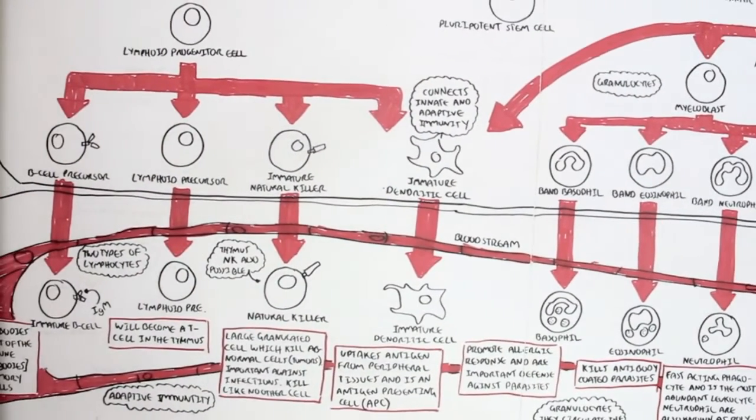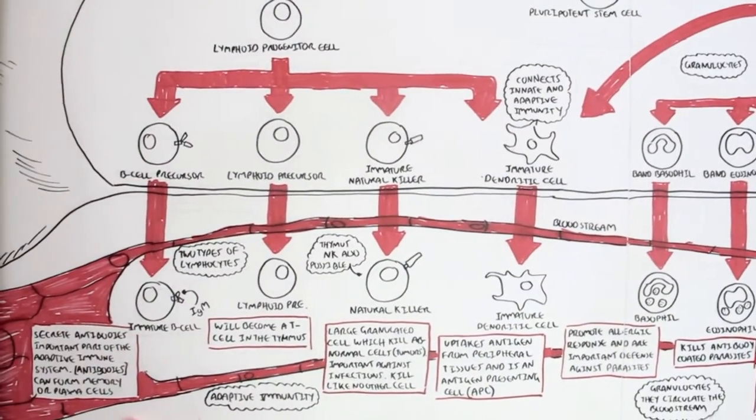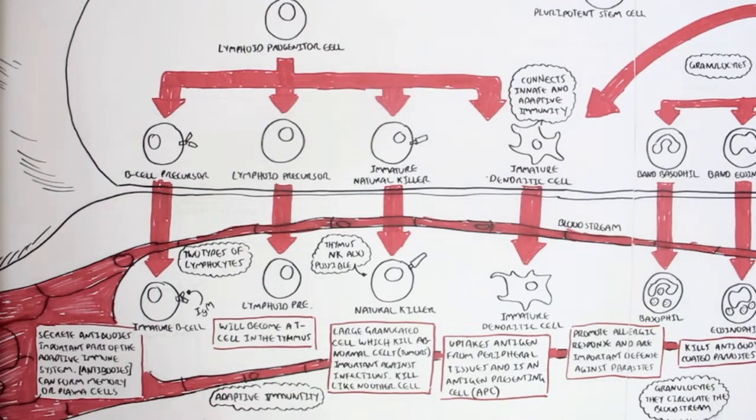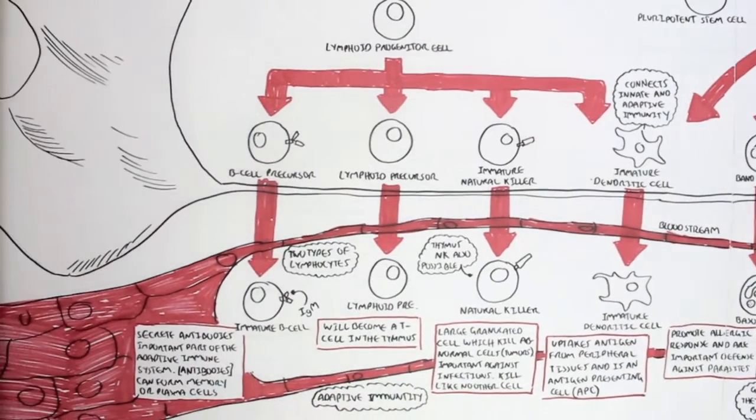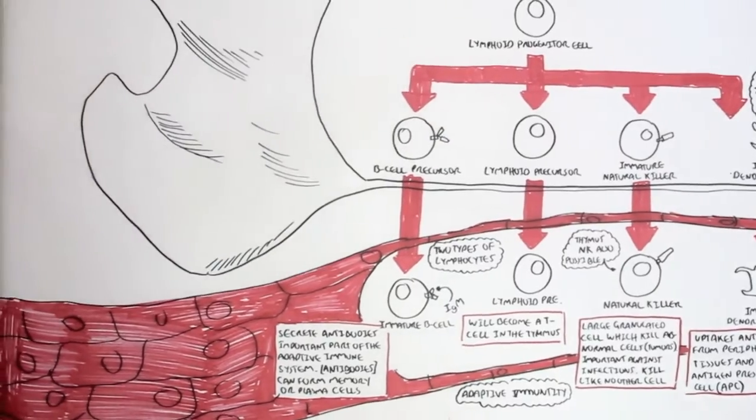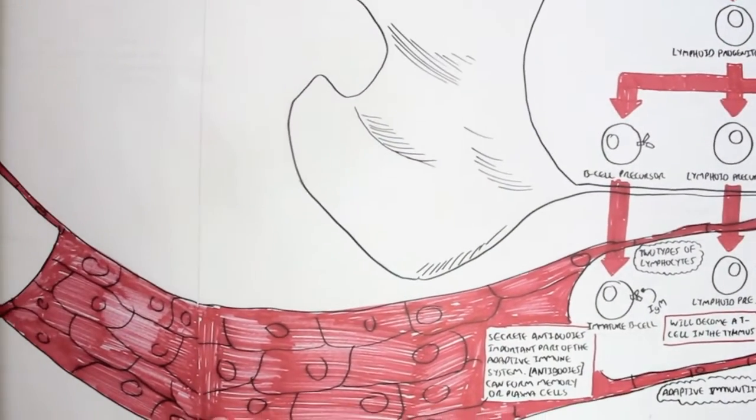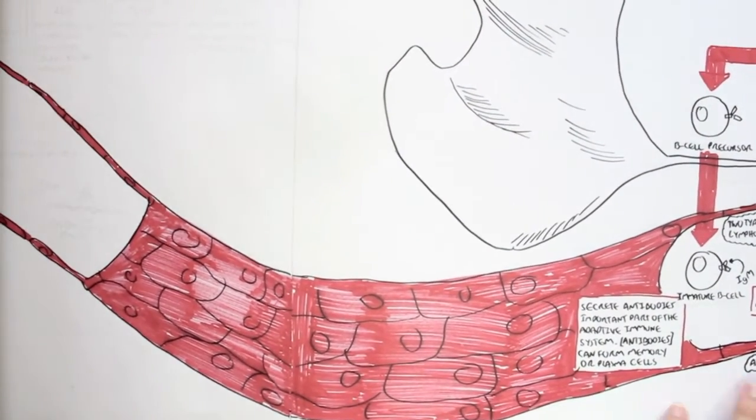We will actually mainly concentrate on this cell here, the lymphoid precursor cell, and follow it into the thymus. That's our main goal. But we will also learn about all the associated organs which we will pass.